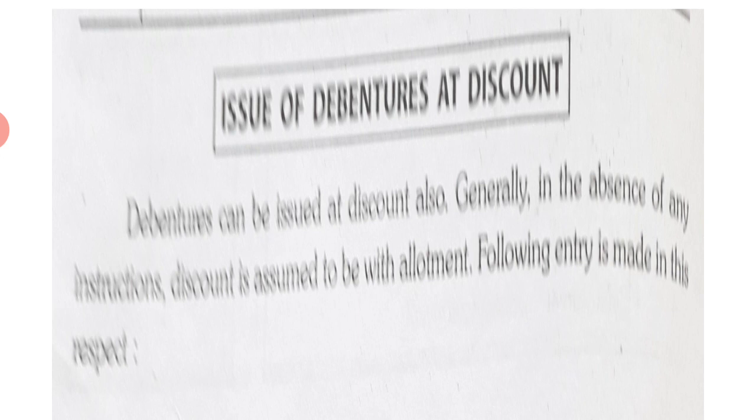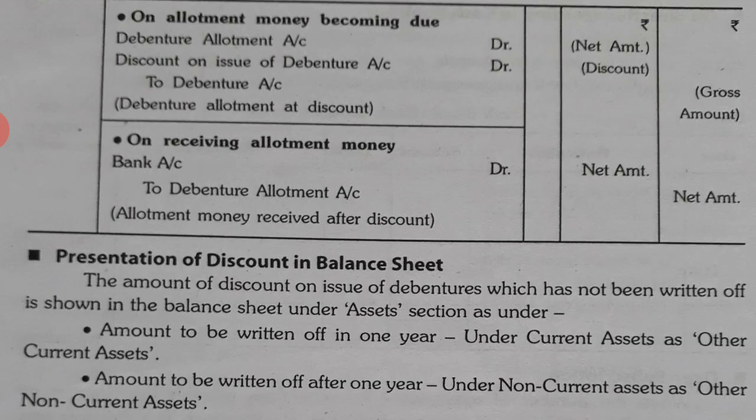Like Shares are issued at Discount, we can also issue Debentures at Discount. We assume that a Discount is given at the time of Allotment. Debentures Allotment Account is debited, Discount on Issue of Debentures Account is debited because it is a Loss, and Debentures Account is credited. In Debentures Allotment Account, we write the Net Amount after deducting the Discount. The amount of Discount is written in the Discount entry, and the gross value is written to Debentures Account. When money is received, after deducting the Discount, the remaining money is received, so Bank Account is debited to Debentures Allotment Account.